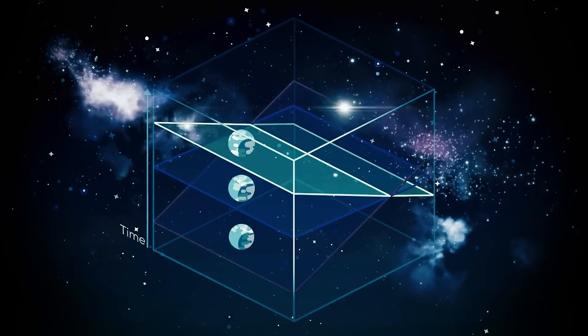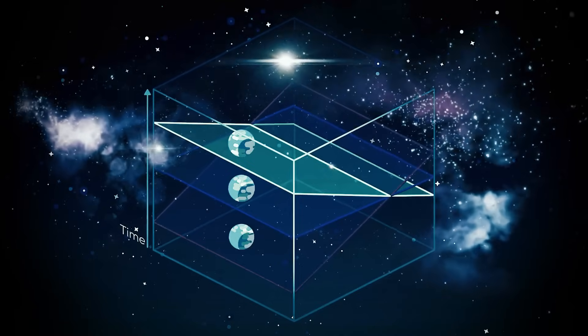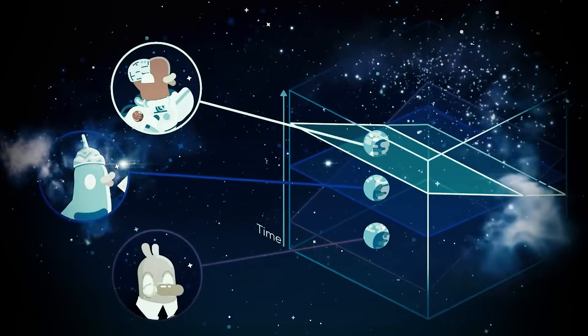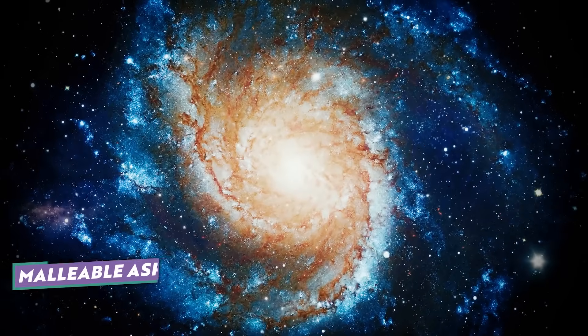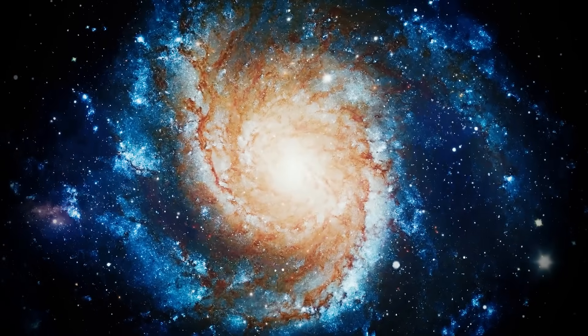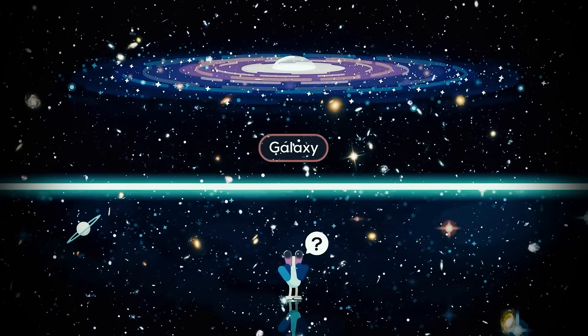So, imagine time as a stretchy, bendy rubber band, responding to the speed you're going and the gravity in your surroundings. It's this malleable aspect of time that adds another layer to our understanding, making it even trickier to pin down and explain in simple terms.